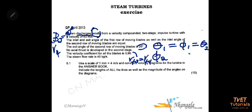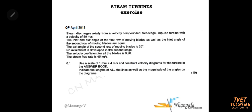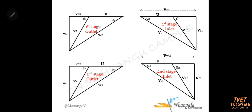The velocity coefficient k for all the plates is 0.96, and the mass flow rate is 45 kilograms per second. So that is all the information that is given. Now let's look at the velocity diagram and check where these data points fit and where we start drawing.